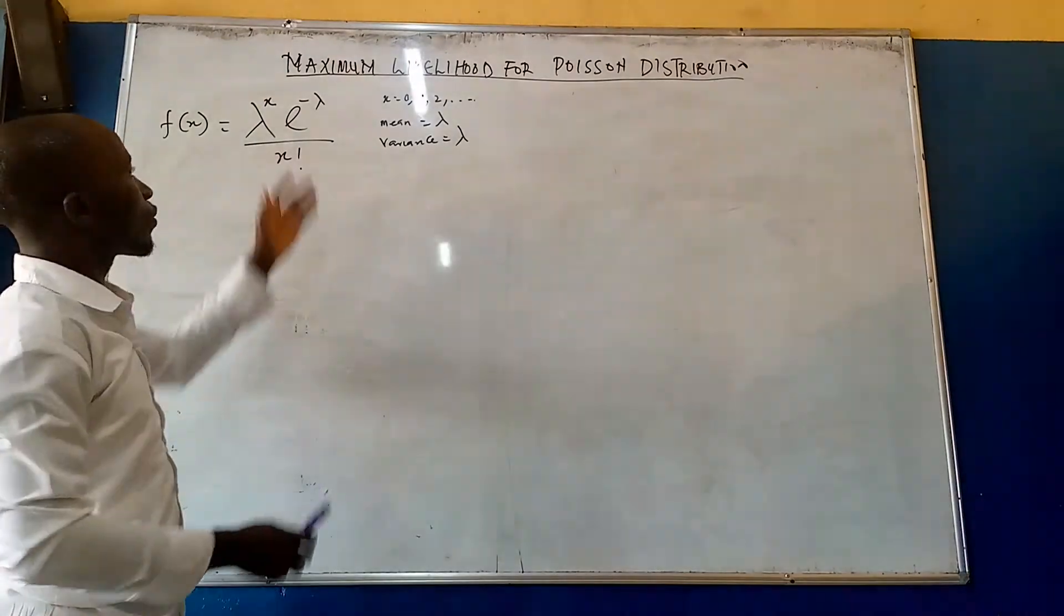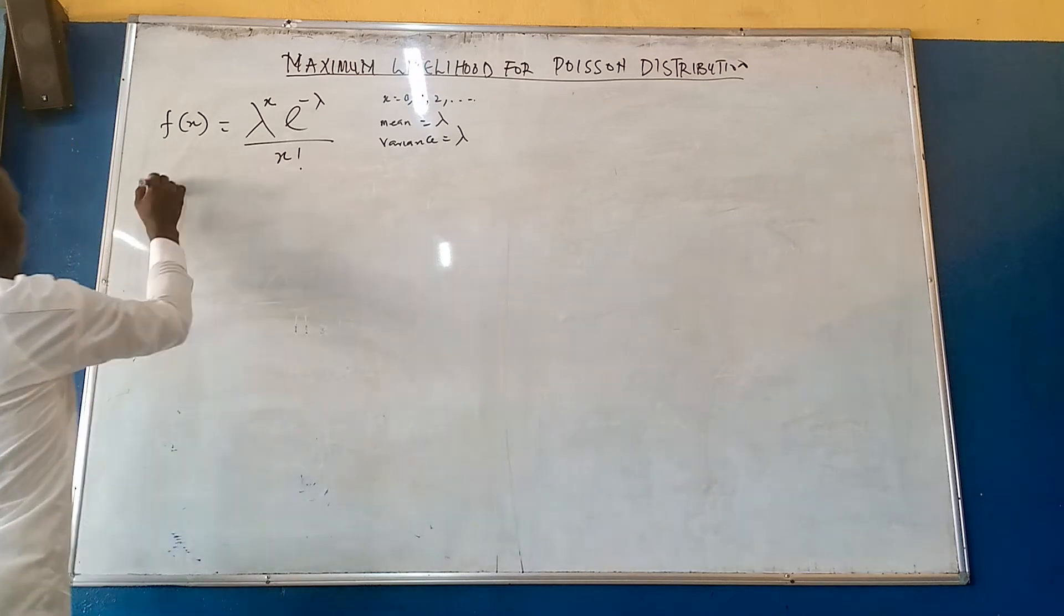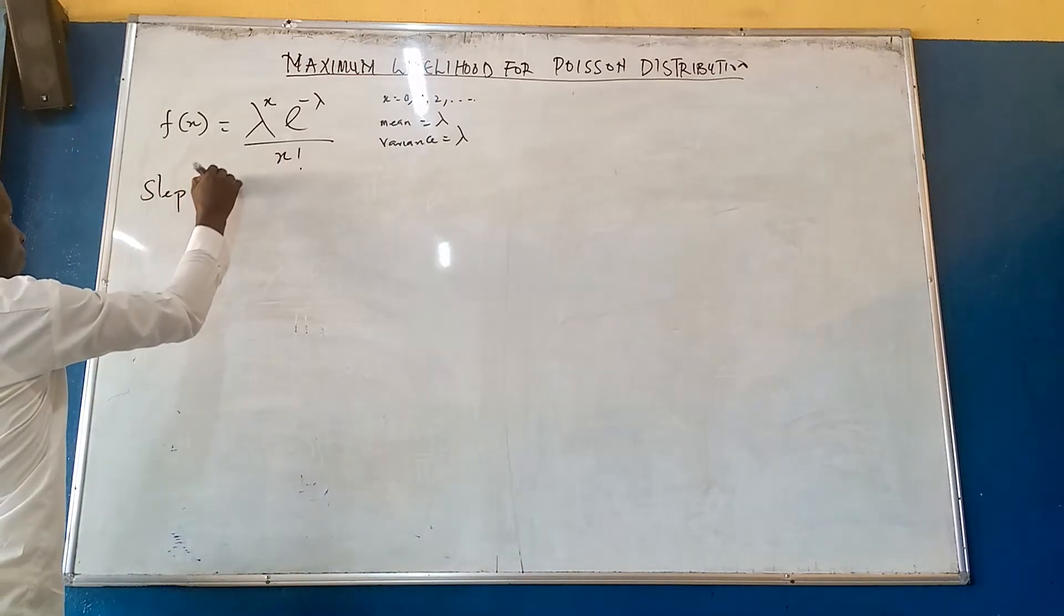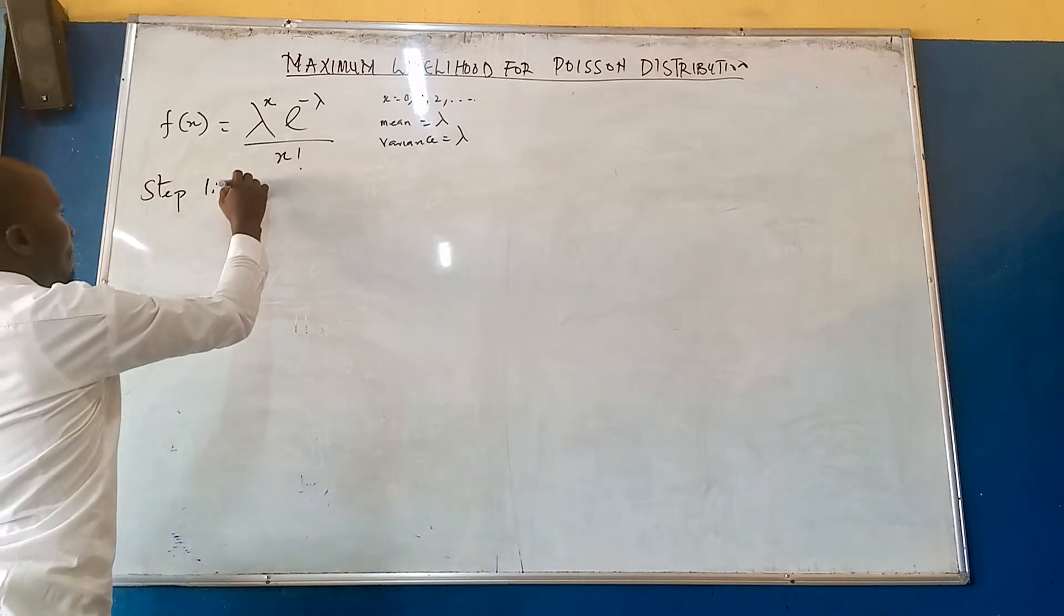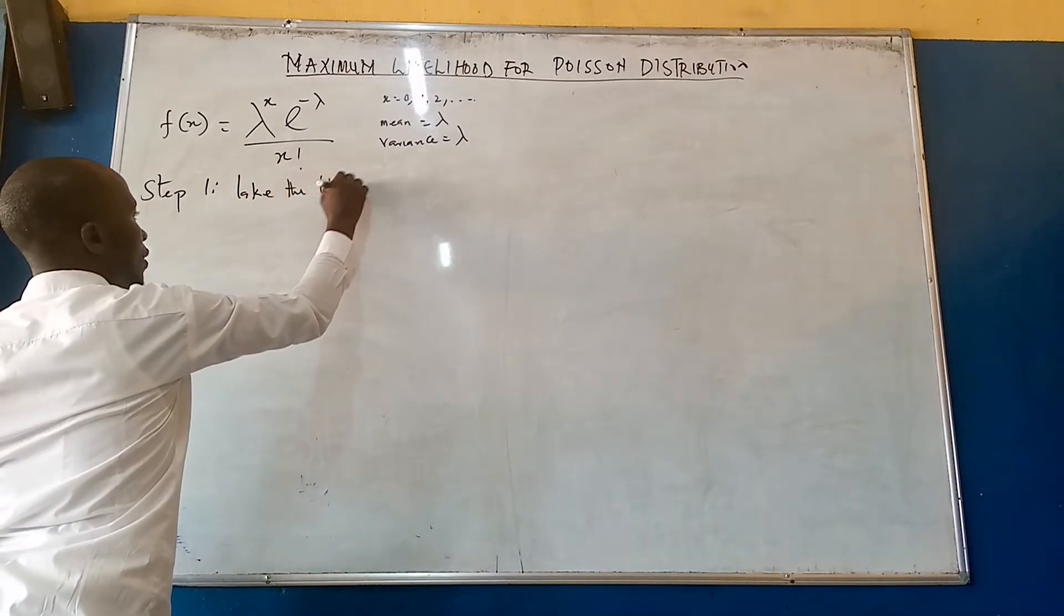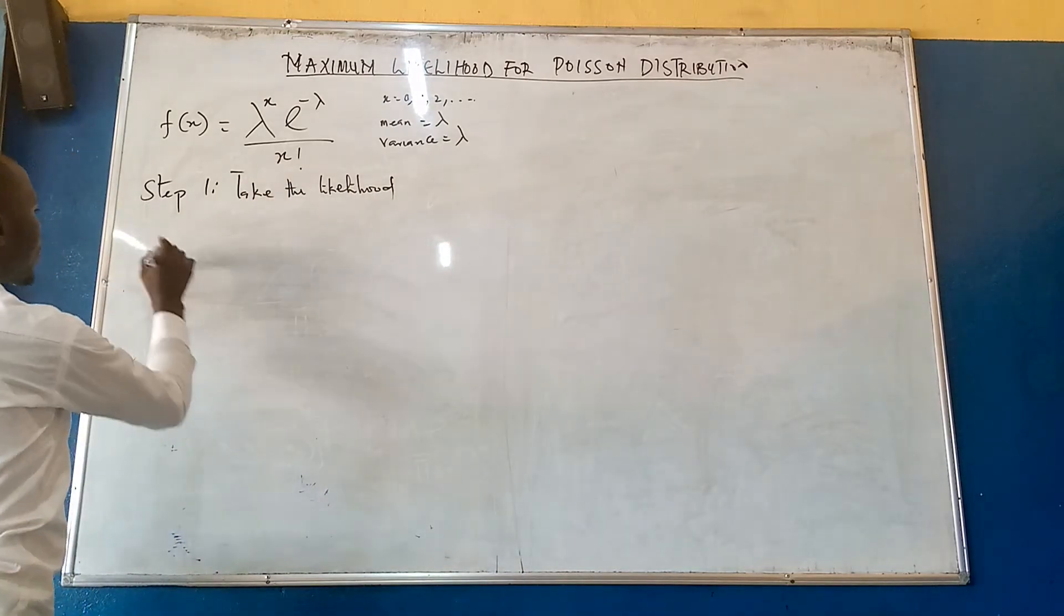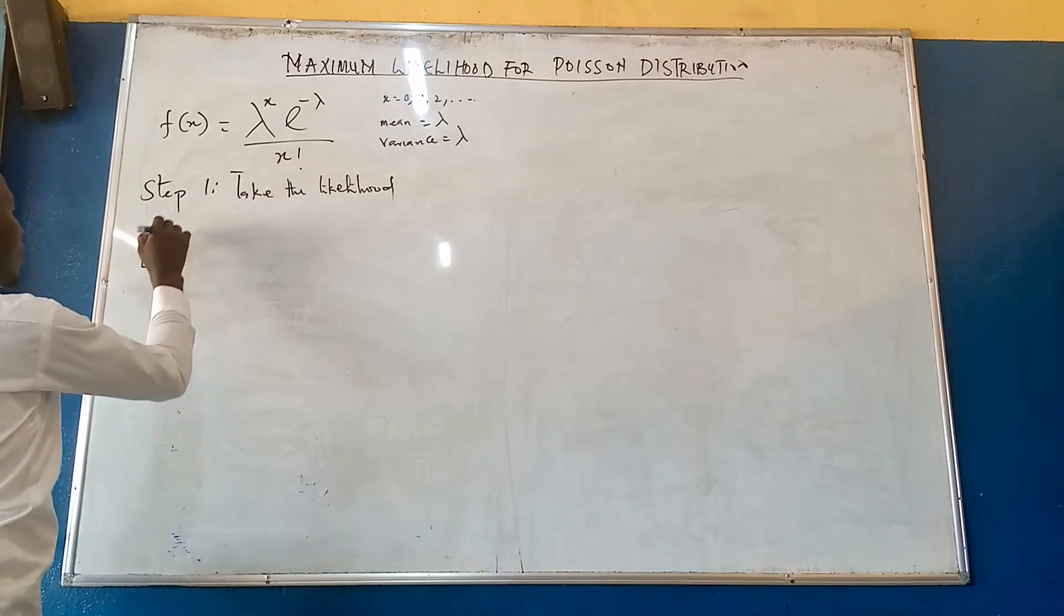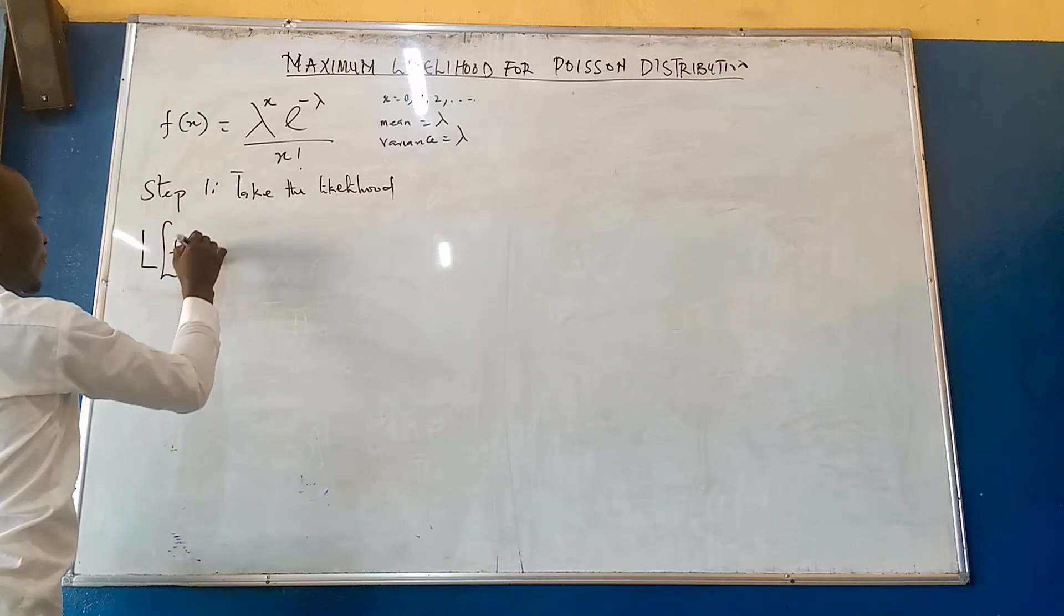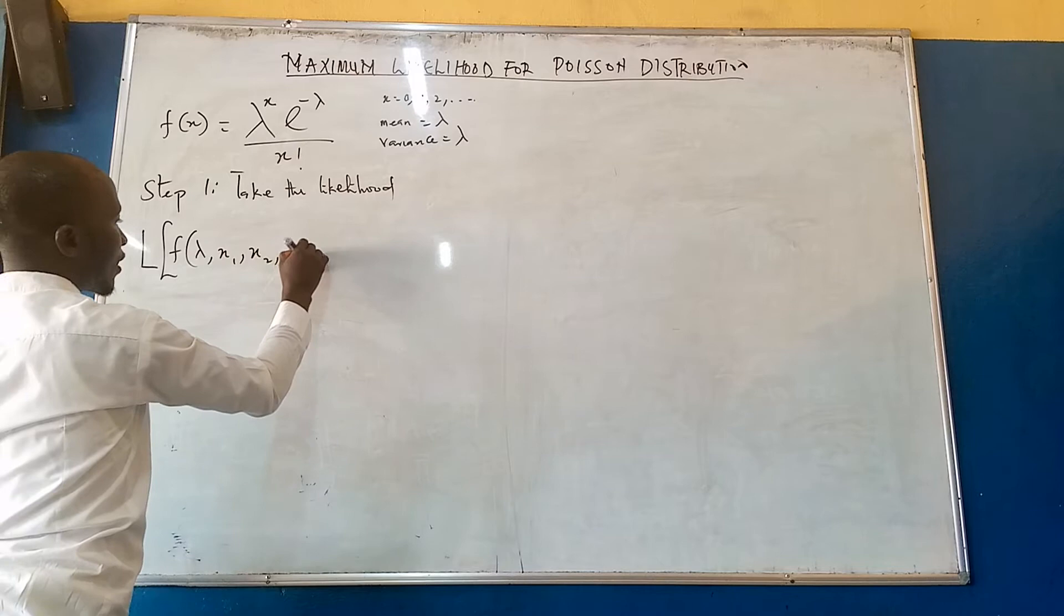Now we are trying to look for the maximum likelihood for the distribution. The first step, step one, take the likelihood. And in doing that,